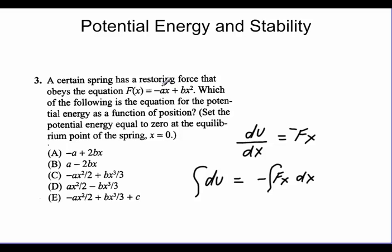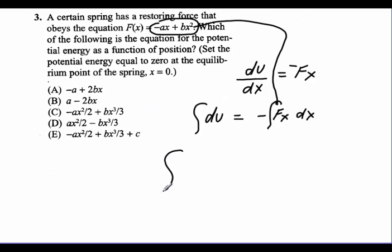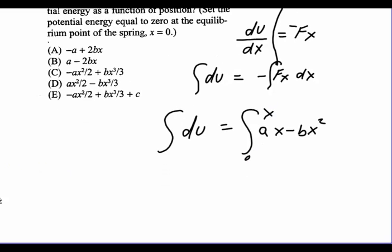Now we'll substitute back in. We'll bring this right here and bring that back in and put it in for f of x. So that's going to give me the integral of du. And I'm going to negate all this when I do that is equal to the integral of ax minus bx squared from 0 to some x value.